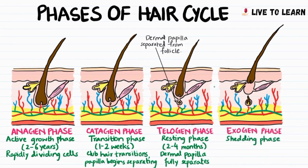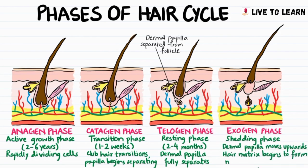The exogen phase is the shedding phase, during which the dermal papilla moves upwards and the hair matrix begins to form new hair.